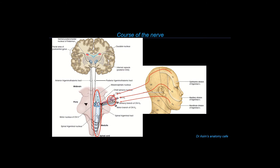The nuclei are functionally specialized to receive specific types of sensory information. First-order neurons bringing proprioceptive information — regardless of whether from V1, V2, or V3 distribution — synapse in the mesencephalic nucleus of the trigeminal nerve. First-order neurons bringing vibration and two-point discrimination from the face synapse with the main sensory nucleus in the pons. While first-order neurons bringing pain and temperature from any part of the face synapse with cell bodies in the spinal trigeminal nucleus.